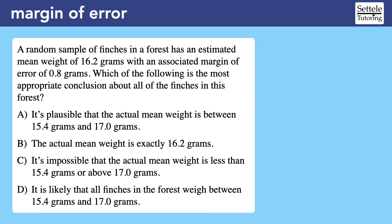A random sample of finches in a forest has an estimated mean weight of 16.2 grams with an associated margin of error of 0.8 grams. Which of the following is the most appropriate conclusion about all of the finches in this forest? The math here is simple. We will add and subtract the margin of error from the mean.